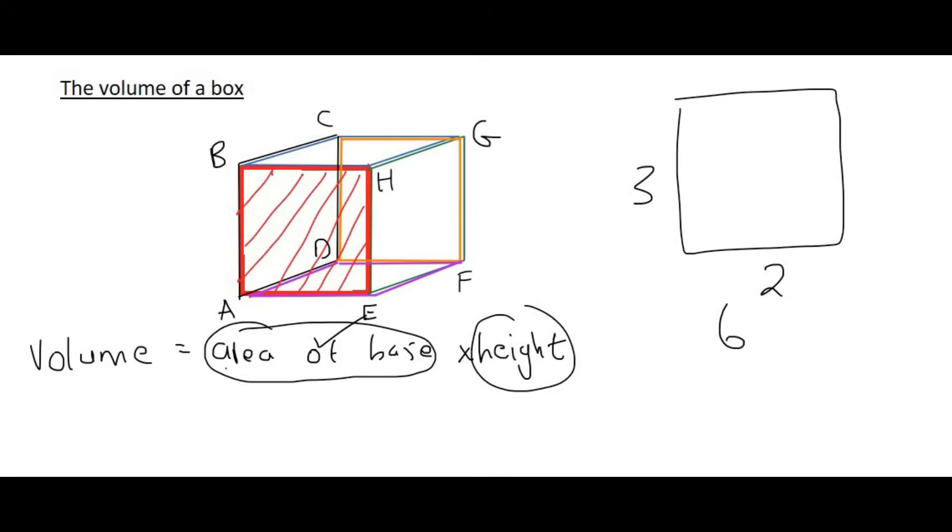We would have to drag that square all the way to the back. Because imagine you had to drag it all the way to the back. Well, then it would complete the entire shape of the box. And so that is what we mean by the height. So the height is going to be the distance from E to F or from H to G or from B to C, for example, or from A to D.